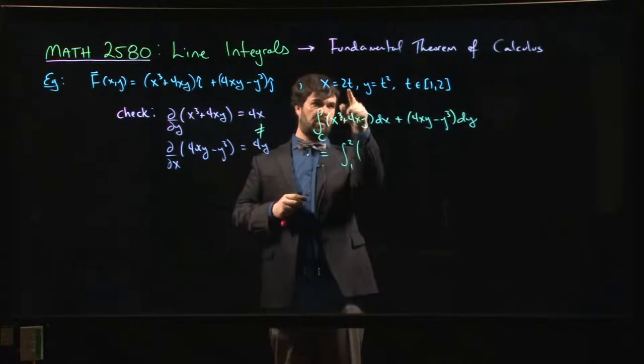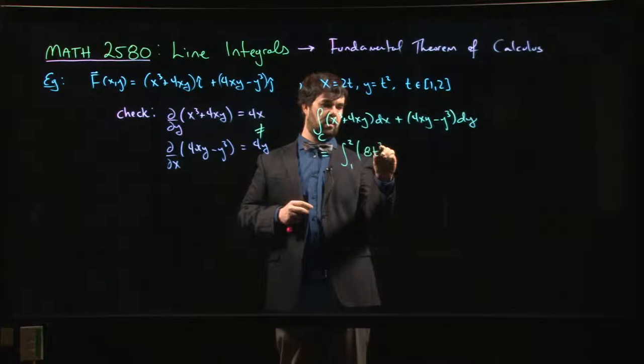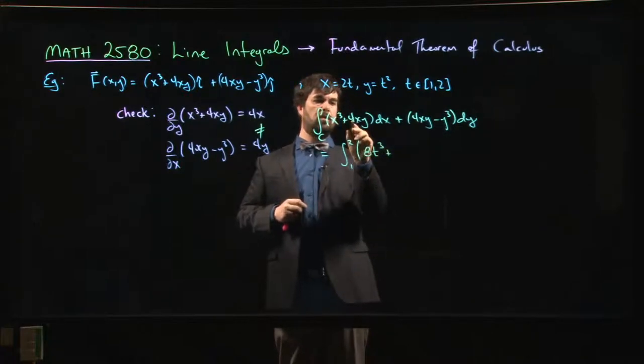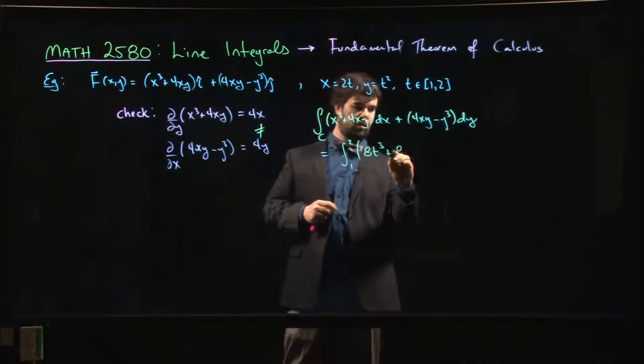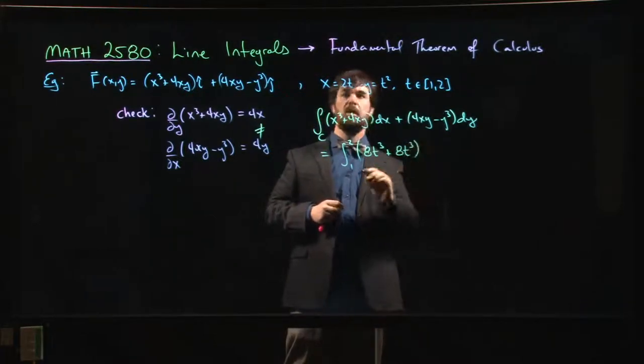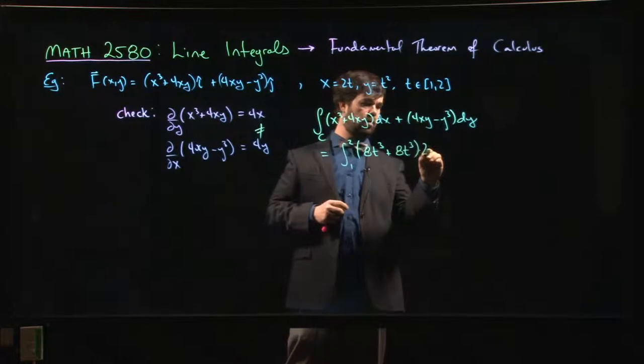So that's going to be x cubed is 8t cubed, 2 times—so 8t times t squared—so another 8t cubed. dx is going to be 2.